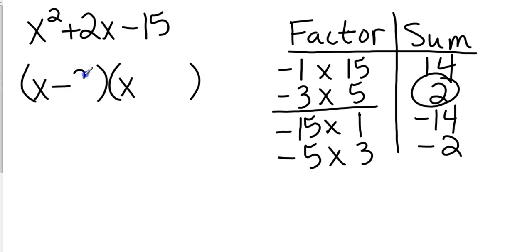So, my factors are negative 3 and 5. So, it's x minus 3, x plus 5. Okay, so that gives me my factors. Again, pay attention to directions. We're going to go ahead and solve this. So, I do both steps.